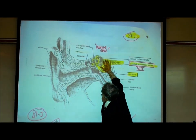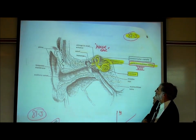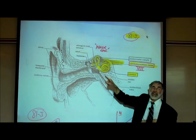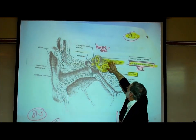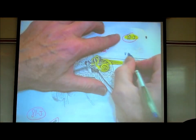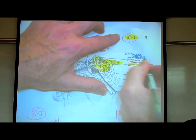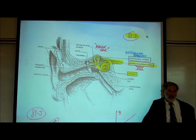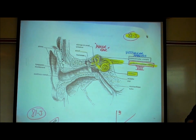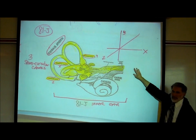The inner ear is this area right here. In the inner ear are two structures we mentioned last class meeting: the cochlea, which looks like a snail — that's the structure for hearing. And this other structure is the vestibular apparatus, the semicircular canals, which is for balance and equilibrium. What's coming off the cochlea and the vestibular apparatus is the vestibulocochlear nerve, cranial nerve number eight.